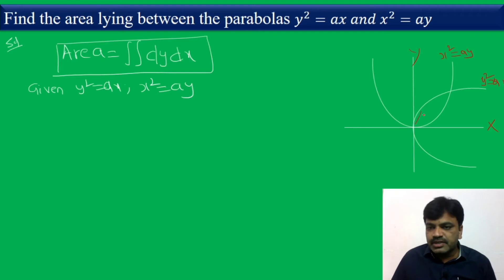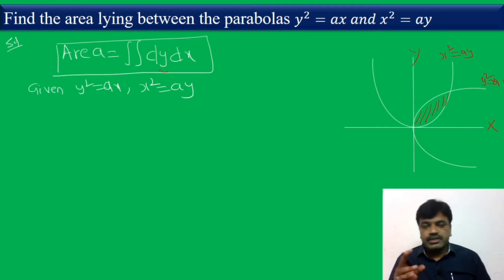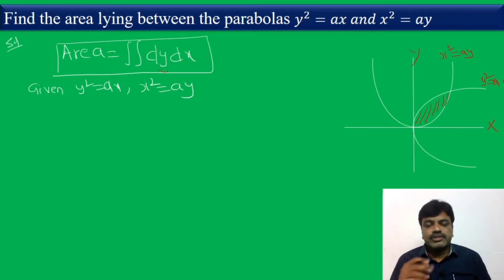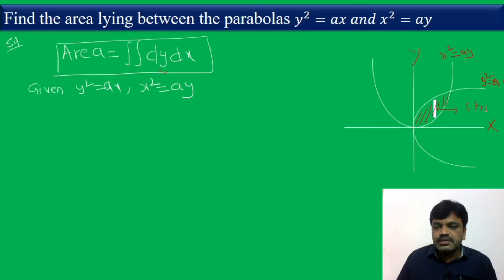We want to integrate first with respect to y, so we draw a vertical strip. When drawing a vertical strip, write y in terms of x. The actual lower curve is x² = Ay, so y equals x²/A — this is the lower limit. The upper curve is y² = Ax, which gives y equals the square root of Ax — this is the upper limit.